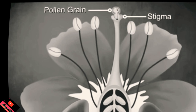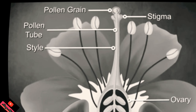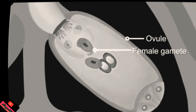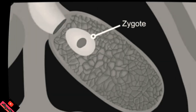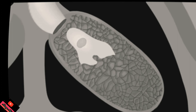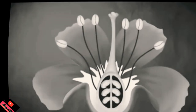The pollen tube gets into the ovary where it meets the ovule. The male nuclei combine with the female gamete to form a zygote. This zygote develops into an embryo. The embryo may have two leaves or one leaf — if it has two leaves it is a dicot seed; if it has one leaf it is a monocot seed.